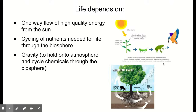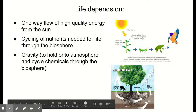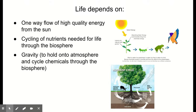Another thing life depends on is chemical cycling. Because we have a fixed amount of matter — carbon atoms, nitrogen atoms — on earth, that matter constantly needs to be cycled through the different spheres so it can end up in the biosphere, get put into a plant, transferred to an animal, and continue cycling through living things. Finally, we depend on gravity. Gravity is crucial to hold the atmosphere around us so we have something to breathe, and it also helps cycle chemicals through the biosphere — think about how water flows downhill due to gravity.